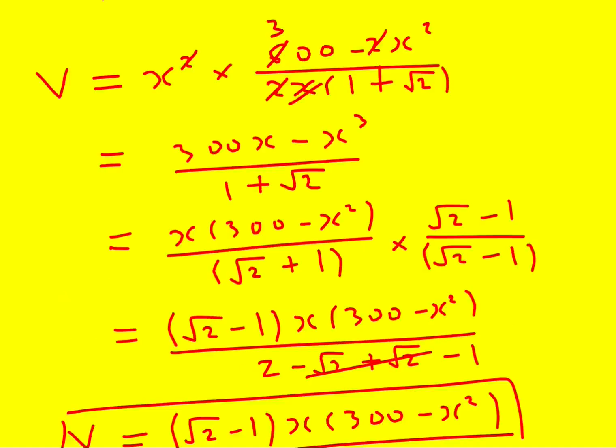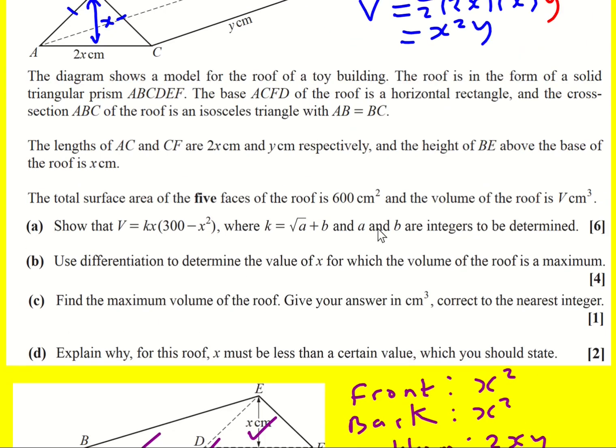Okay, there are a lot of steps to these six marks, but I've shown it. I've got k in the form root a plus b, I've determined what a and b are. I don't need to say that a is 2 and b is 1. It's implied in there. That's the hardest bit of this question for sure.